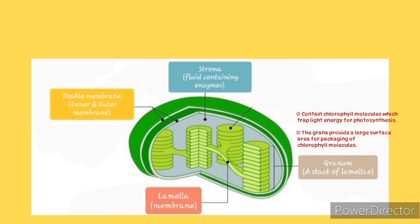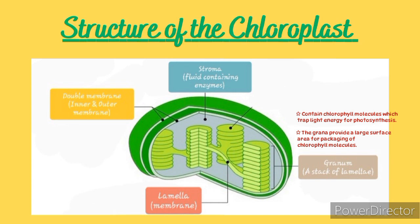It's important for you to remember these two points because sometimes you get questions where you are told to list or explain adaptations of the chloroplasts, and those are the two I've mentioned. Another part of the chloroplast is the stroma. The inner spaces of the chloroplast are filled with a fluid called the stroma, which contains numerous enzymes that speed up the rate of photosynthesis. Remember, enzymes are catalysts, so their function is to ensure that a process occurs quickly and within a shorter period of time.